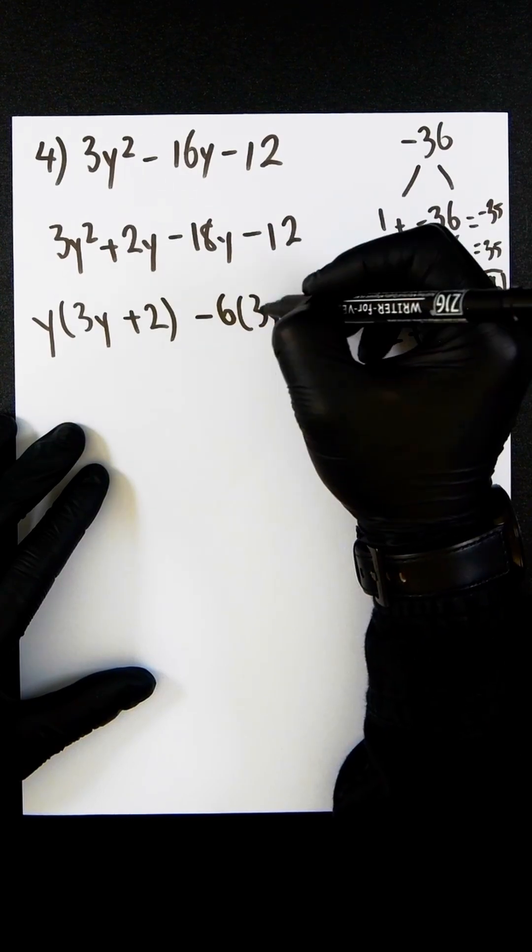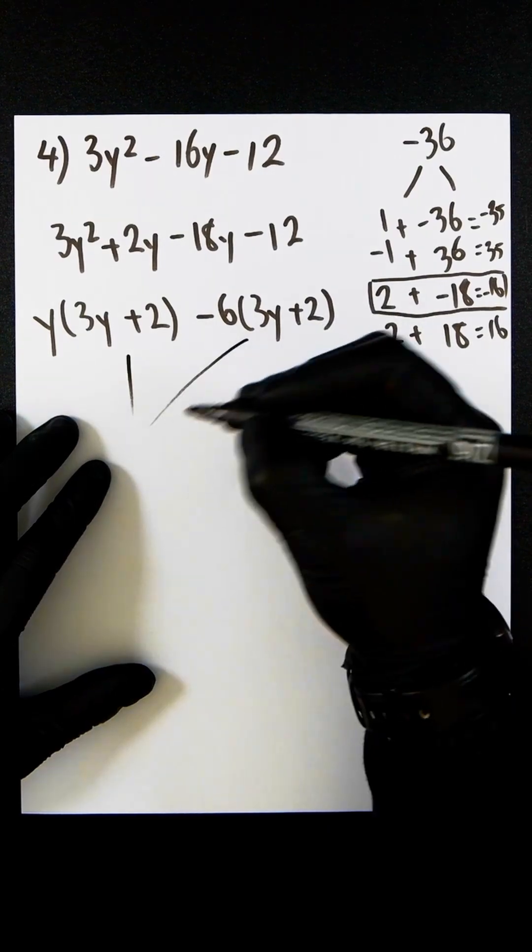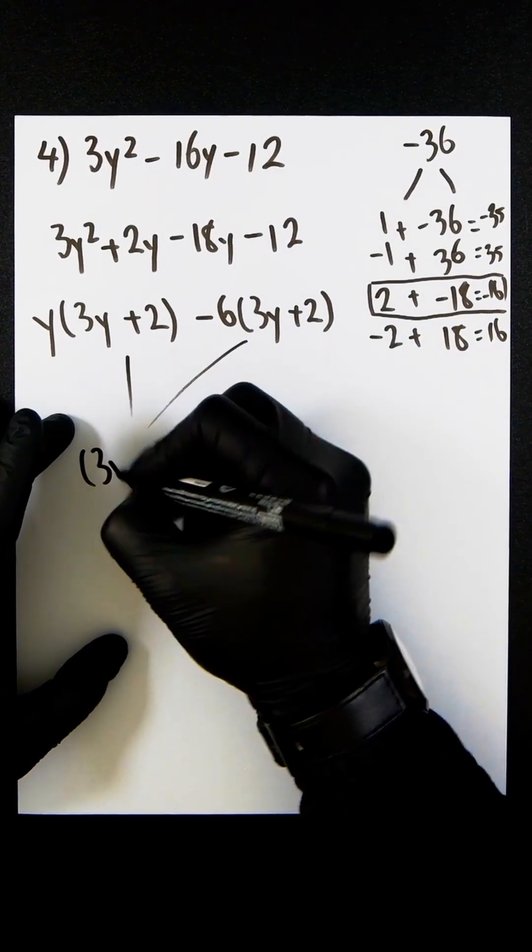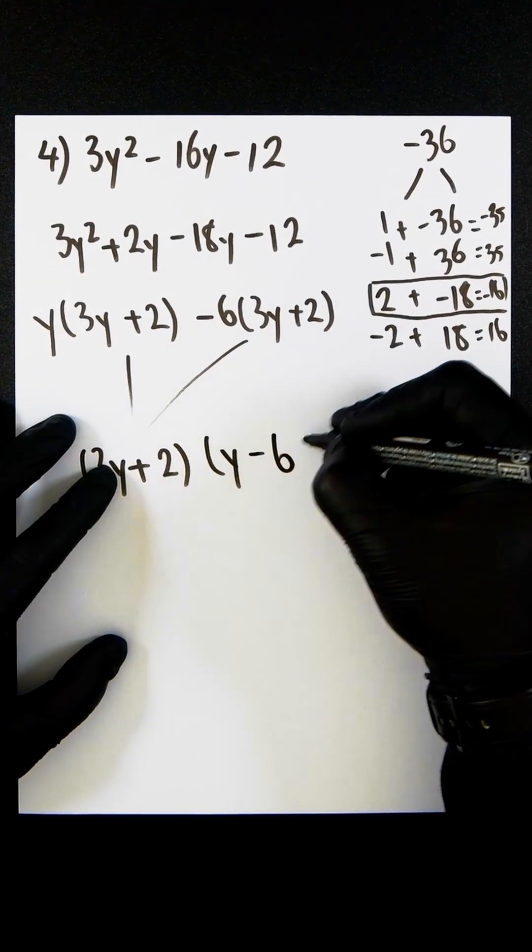gives us minus 12 and minus 18y. We then put these together: 3y plus 2. Everything outside the brackets is y minus 6.